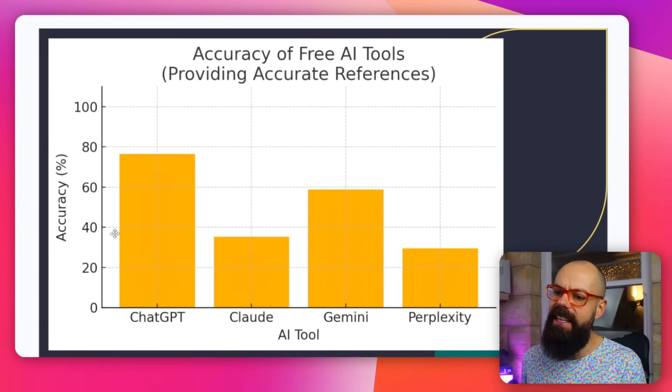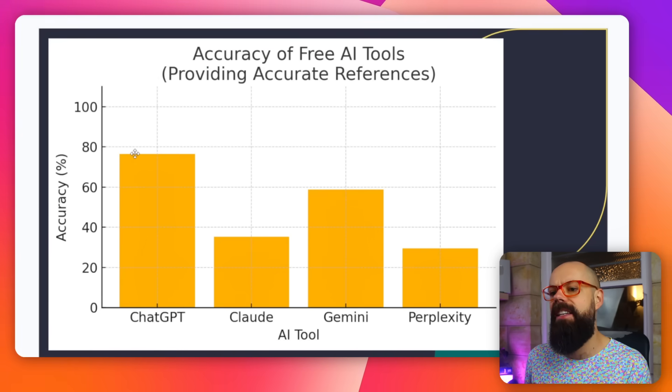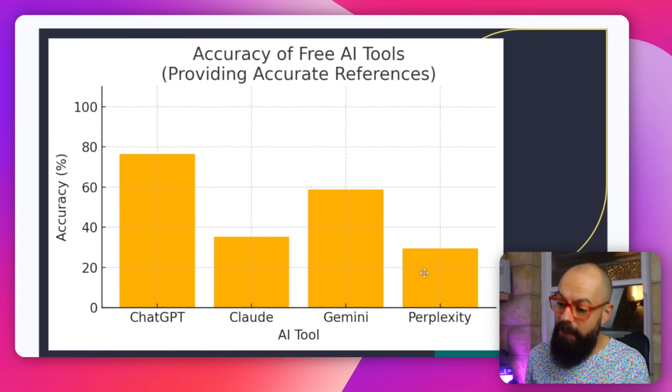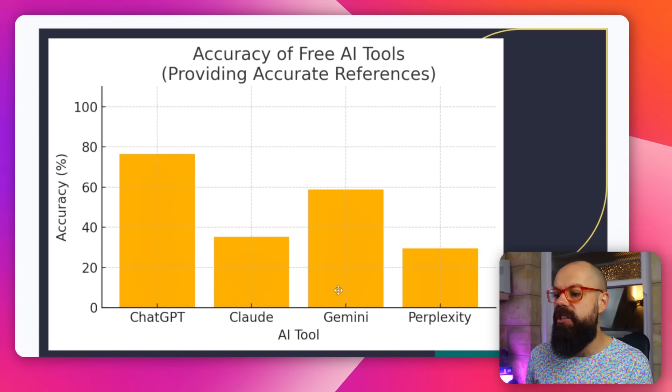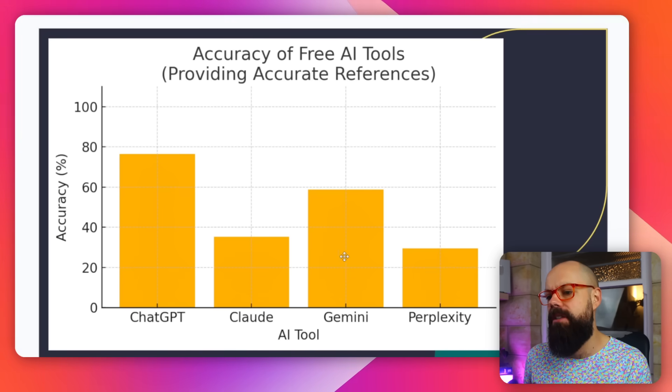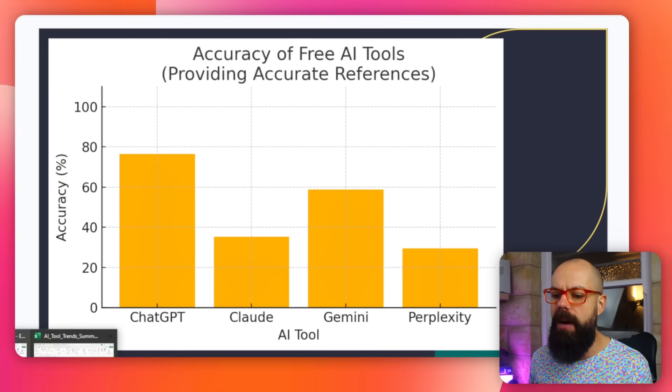Here are the results. You can see that ChatGPT had an inaccuracy of just under 80%. Claude and Perplexity performed pretty poorly, and Gemini was the second best. So ChatGPT was the best of these four free models at getting accurate references — but there is still quite a massive hallucination rate, and it can be convinced more easily to give false information in this task.